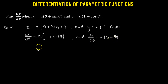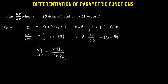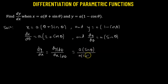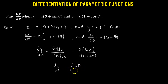To find the derivative of y with respect to x, we take dy/dθ divided by dx/dθ. That gives a times sine theta in the numerator, divided by a times 1 plus cosine theta. The a cancels from both numerator and denominator, leaving dy/dx = sine theta over 1 plus cosine theta.